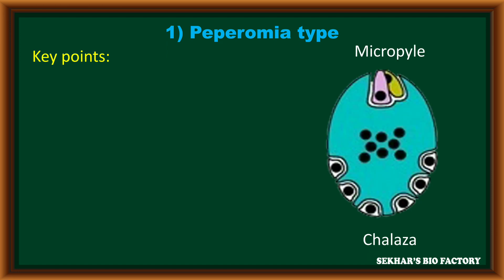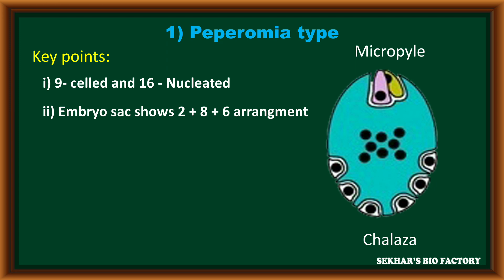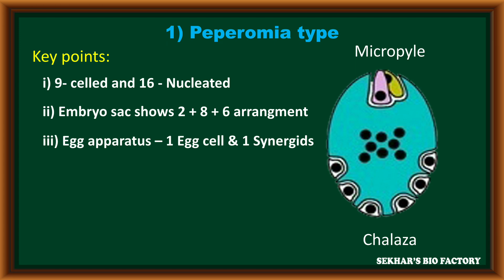In the structure of the Peperomia type of embryo sac, four haploid functional megaspore nuclei participate in the development of the embryo sac. This embryo sac is a seven-celled and 16-nucleated structure. It shows a two plus eight plus six arrangement. Towards the micropylar end, only two cells are present in the egg apparatus — one is the egg cell and another one is the synergid.